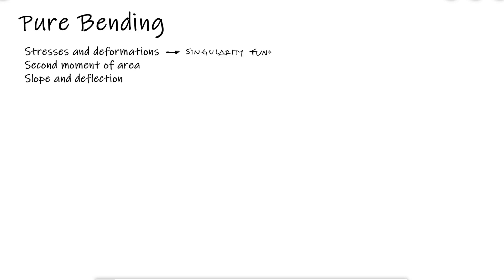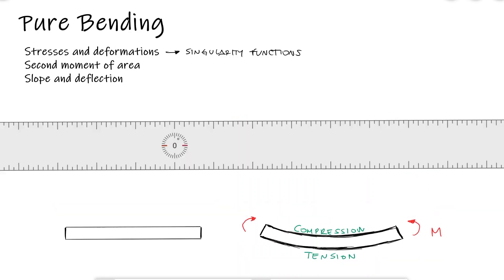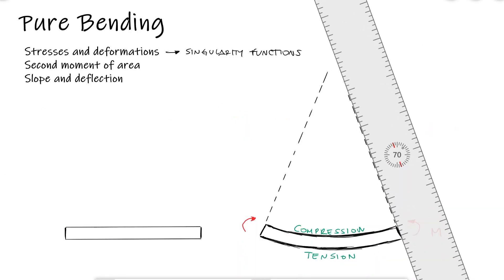This also includes singularity functions. Let's start with a simple beam that is subjected to what we define as a positive moment. If we look at the top and bottom of the beam, we notice that the top is under compression and the bottom is under tension. If we look at the deformed beam under an exaggerated deformation, we can see that there's one plane that has not been stretched or compressed, and that plane is what we call the neutral axis.